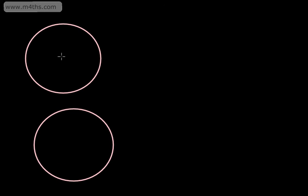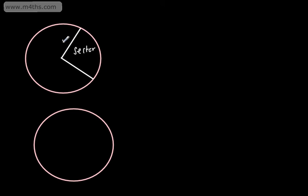In the last video, we looked at a sector. So if we had a center, a radius, and another radius, this area right here was called a sector. So we had a sector, with a radius here, radius here, and then we had some angle, which we called theta.